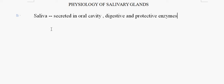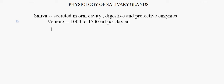The volume of saliva secreted is generally around 1000 to 2500 milliliters per day, approximately one milliliter per minute. There are generally two types of glands which secrete saliva: the major salivary glands and the minor salivary glands. The major glands include three important glands — the parotid glands, submandibular glands, and the sublingual glands.